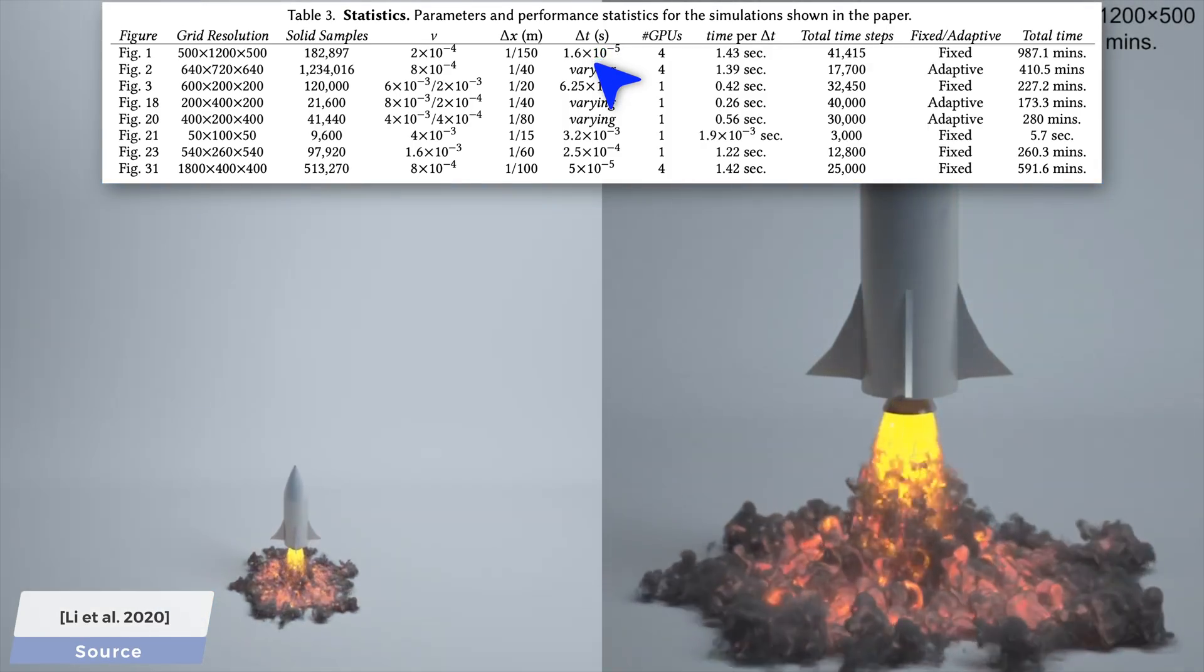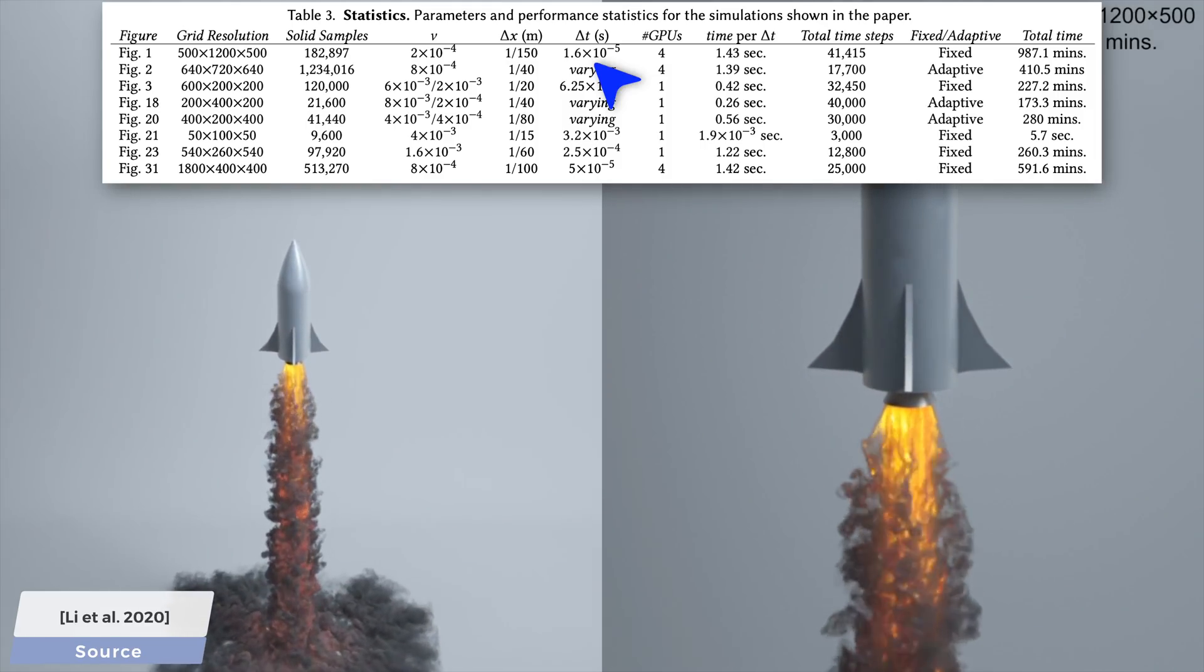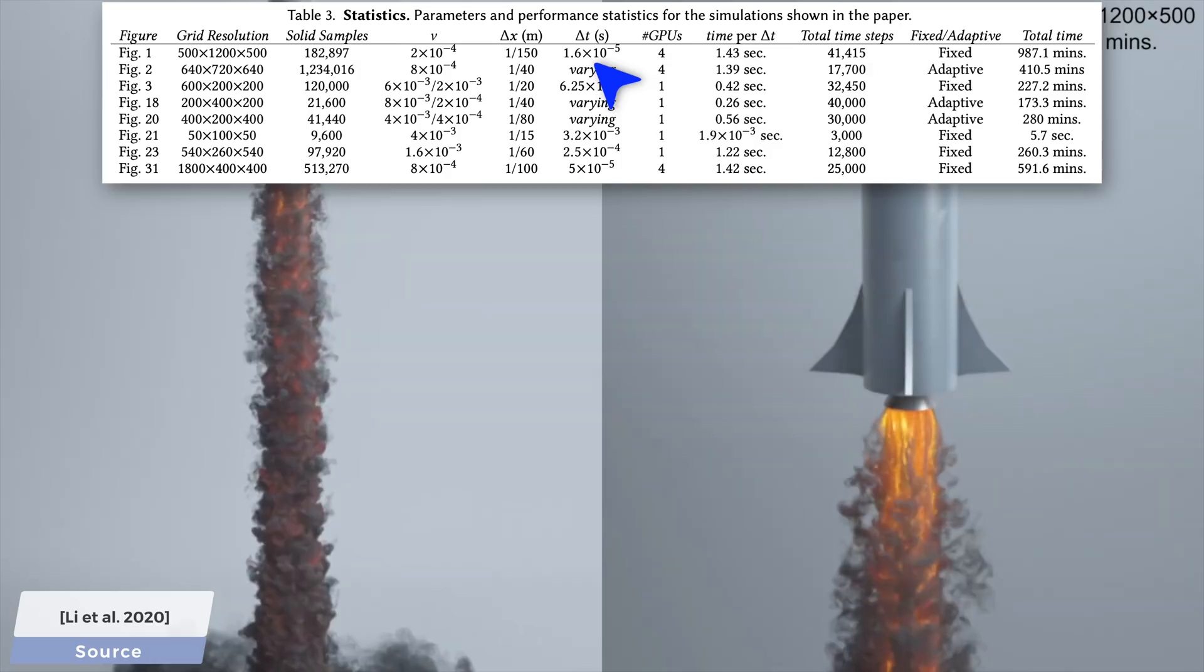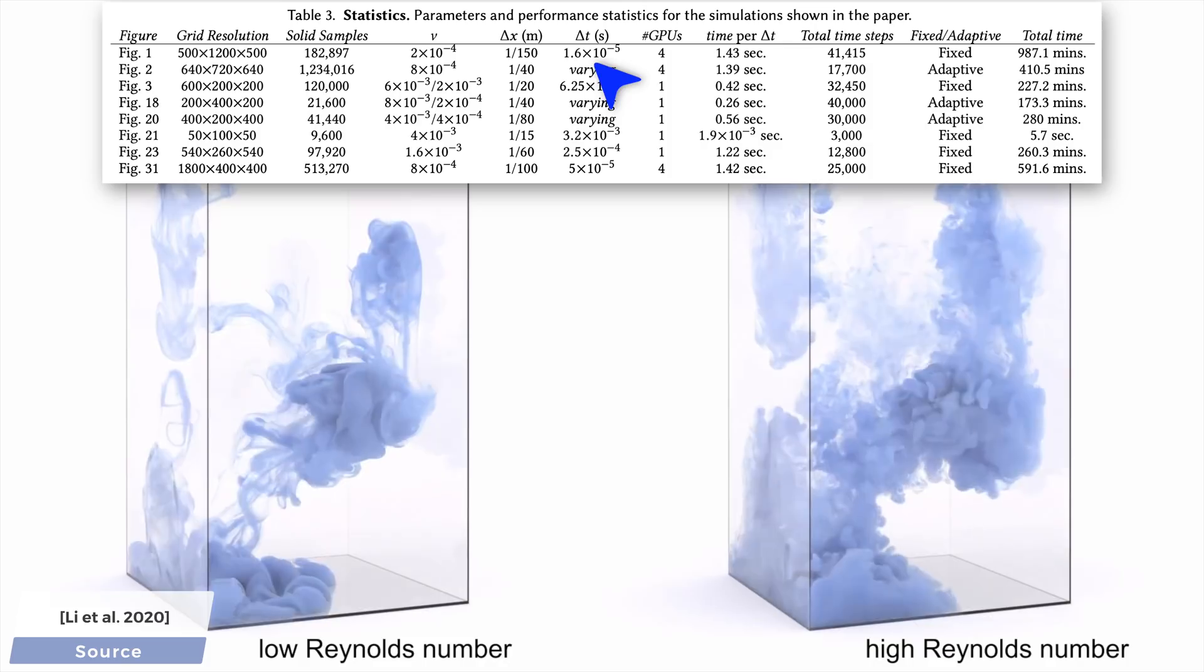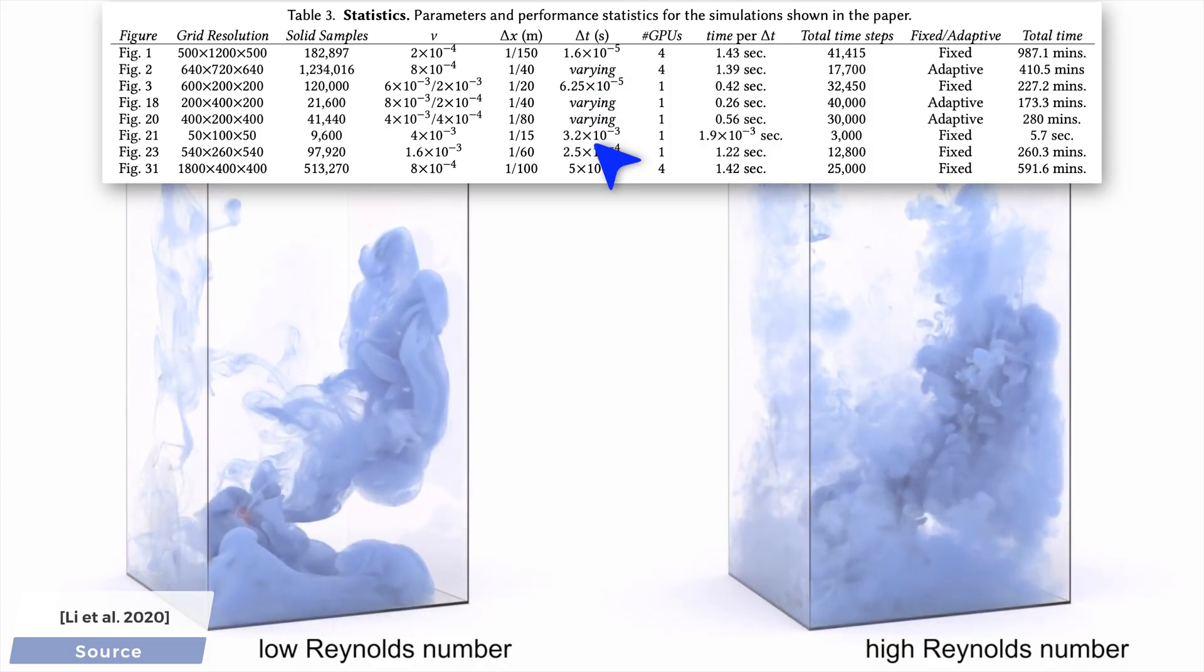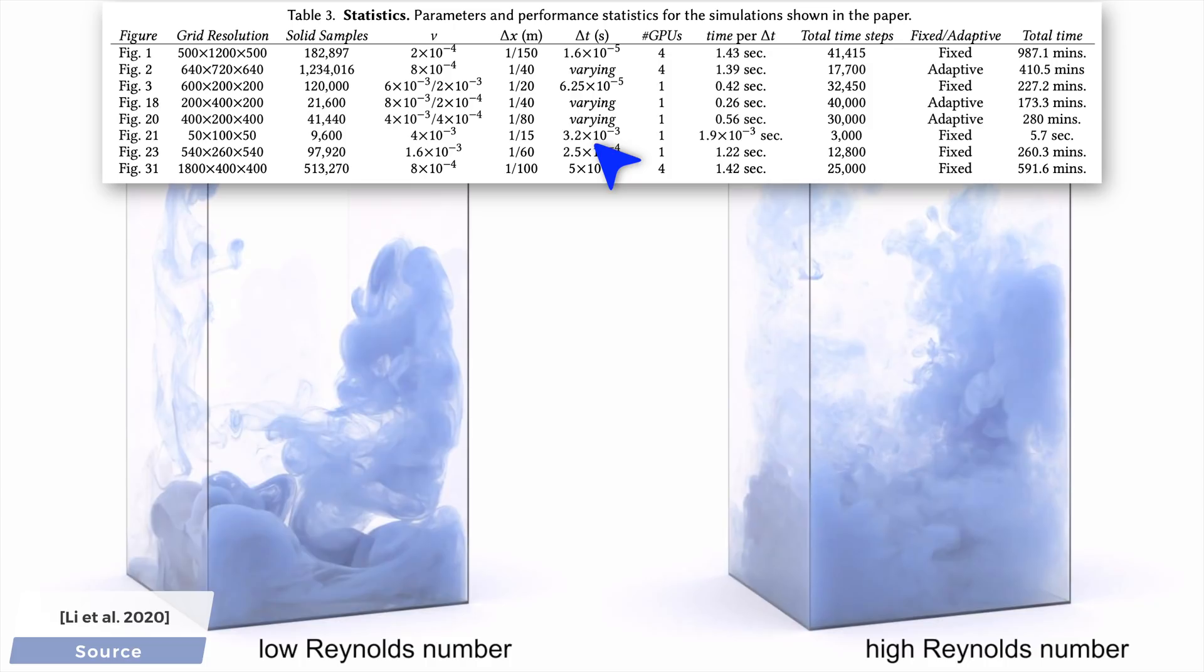You see here that in the rocket example, we have to simulate roughly a hundred thousand steps for every second of video footage. No wonder it takes so long. We have an easier time with this scene where these time steps can be 50 times larger without losing any detail, and hence, it goes much faster.